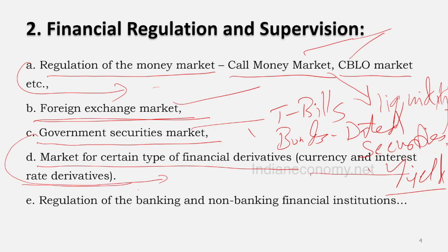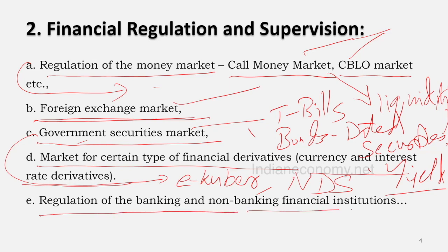RBI facilitates the government to borrow from the domestic market through its e-Kuber platform for the auction of government securities. There is also a Negotiated Dealing System. All such facilitations are made by the central bank regarding the promotion and regulation of the government securities market.